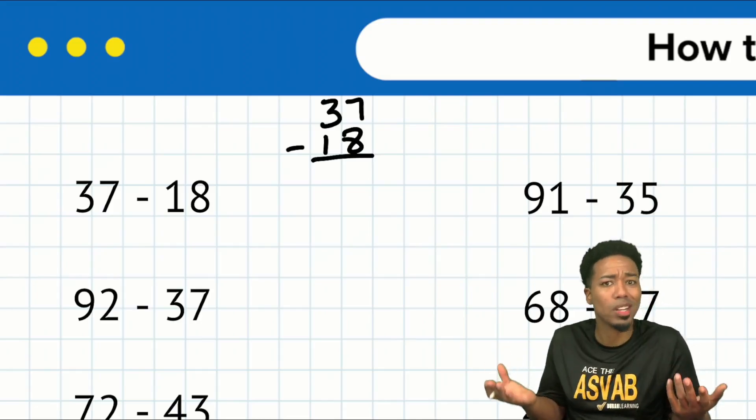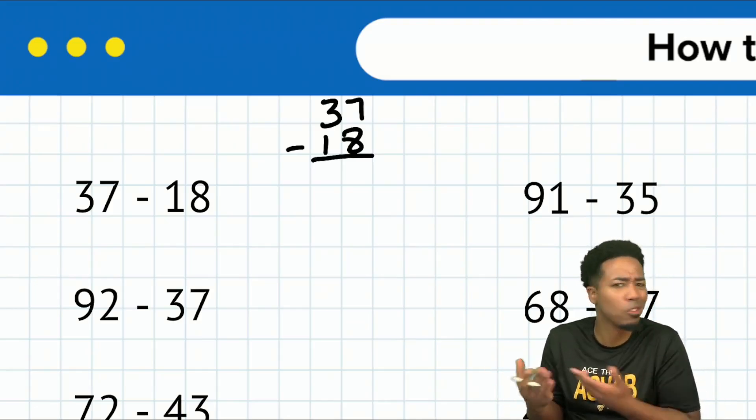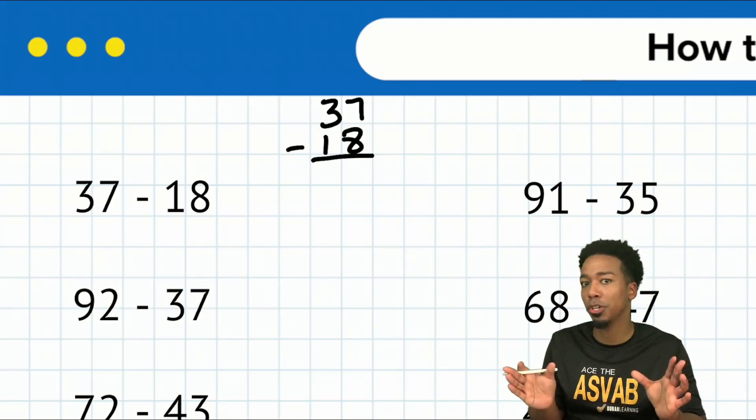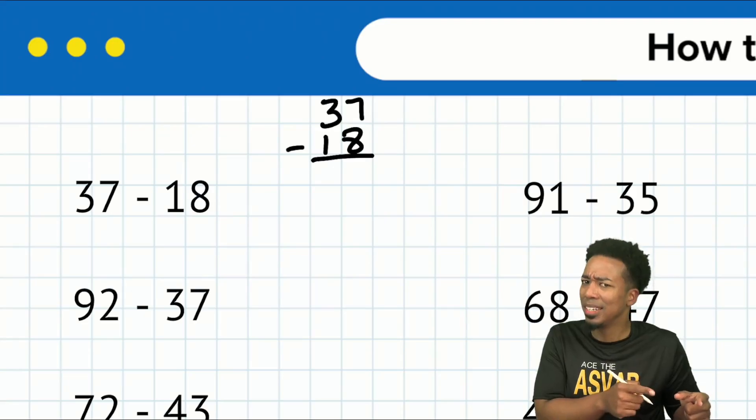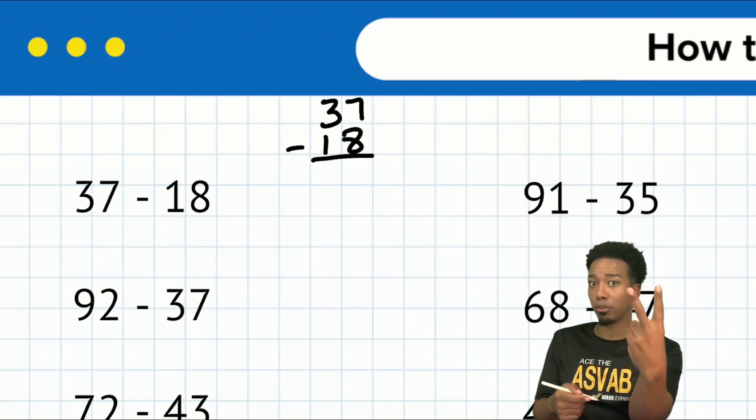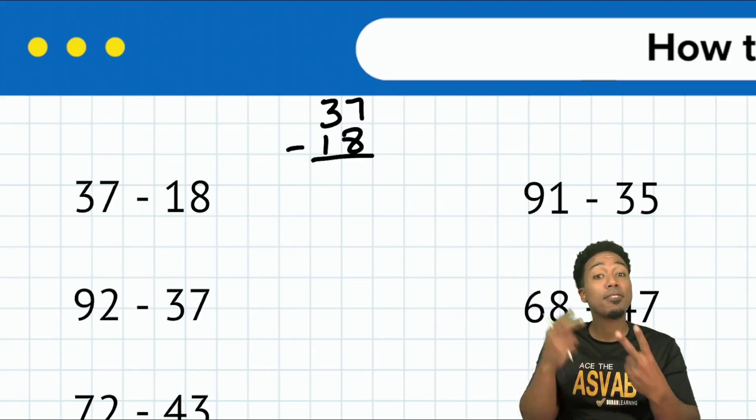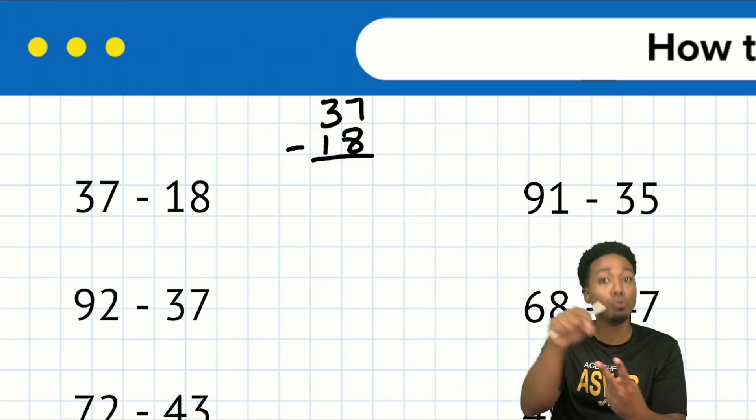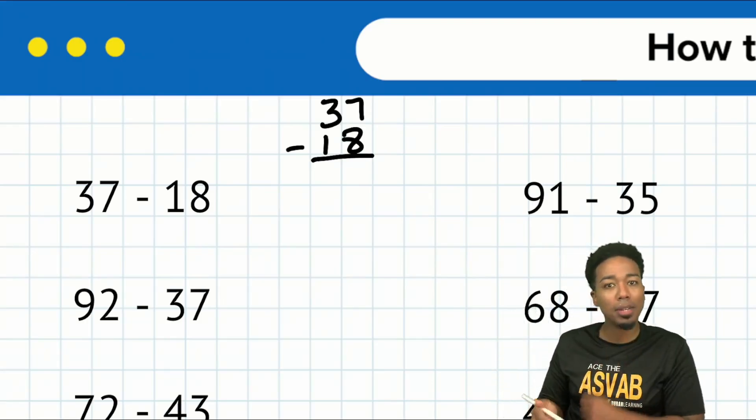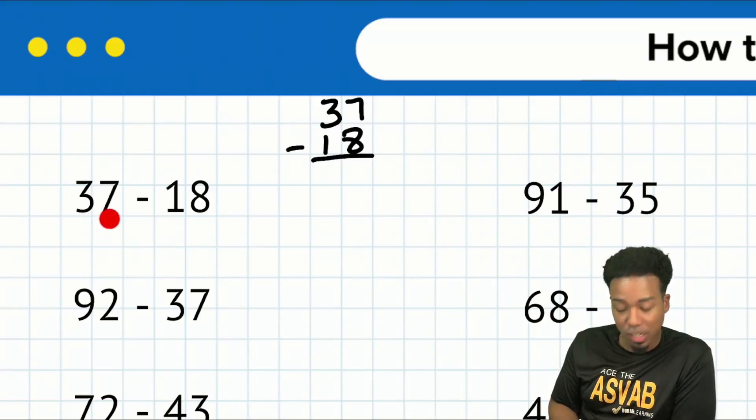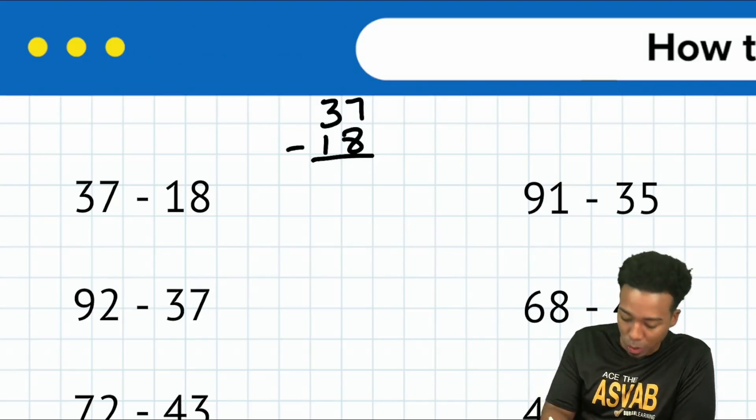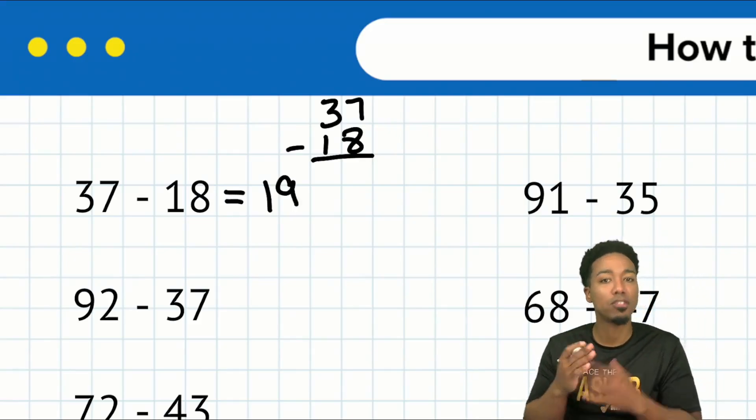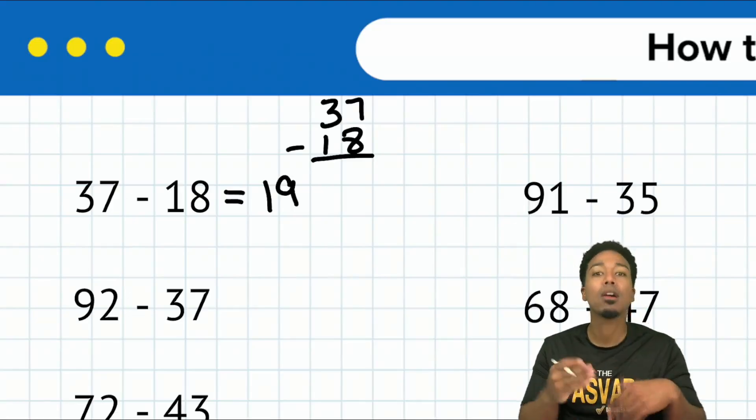What if I just subtracted 20? But what would I have to do after? Notice that we're actually supposed to be subtracting 18. So if I subtract 20, I'm taking away two numbers too many. If I subtract 20, I'm going to have to add two back. Think about how easy that looks. 37 minus 20 is 17. Add two back, that's 19. You can get that done very quickly, and it's going to give you the advantage of saving time so you can focus more on those word problems.